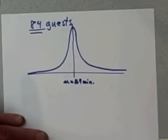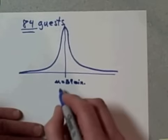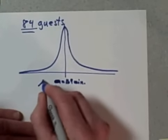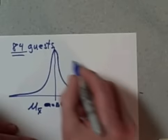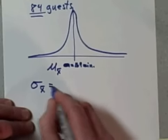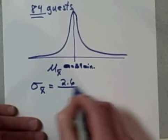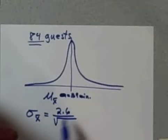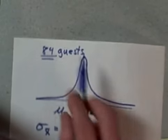And how do we calculate the standard deviation? By the way, the proper notation for this is μ sub x-bar. The standard deviation is σ sub x-bar, and that is equal to the original standard deviation of 2.6, but we have to divide that by the square root of the size of my sample—in other words, the 84 guests.